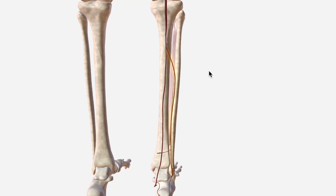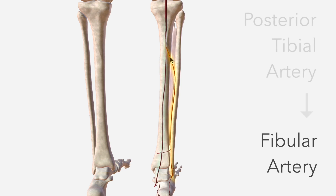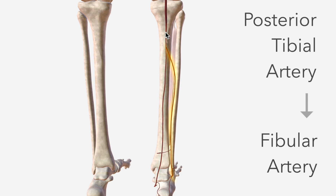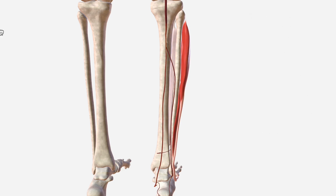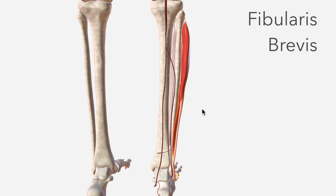The fibular artery arises as the largest branch of the posterior tibial artery. It supplies the lateral compartment of the leg, which is a fascial compartment containing these two muscles: fibularis longus and fibularis brevis.